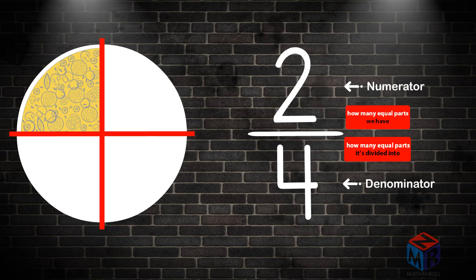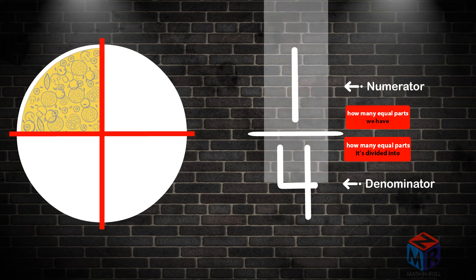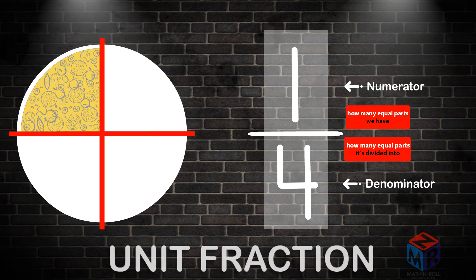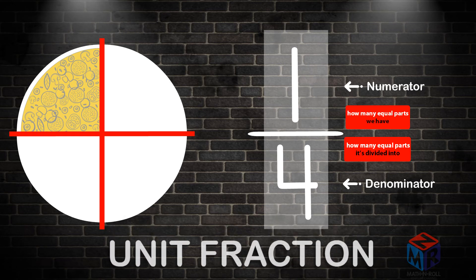What if somebody came by and ate one more piece? The pizza is still divided into 4 parts, so the bottom number — the denominator — would still be 4. But we only have 1 piece left, so that means the top number — the numerator — would change to 1. So we only have 1 over 4 of the pizza. The numerator is 1, the denominator is 4, and the fraction is 1 over 4. 1 over 4 is a unit fraction. A unit fraction is a fraction whose numerator is 1.